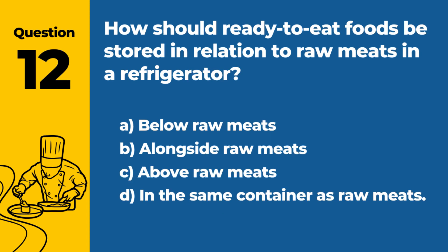Question 12: How should ready-to-eat foods be stored in relation to raw meats in a refrigerator? a. Below raw meats. b. Alongside raw meats. c. Above raw meats. d. In the same container as raw meats. Answer: c. Above raw meats. Ready-to-eat foods should be stored above raw meats in a refrigerator to prevent cross-contamination.